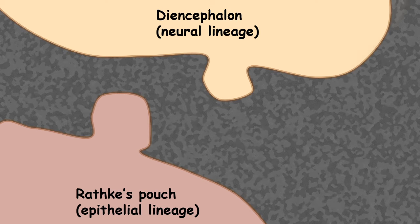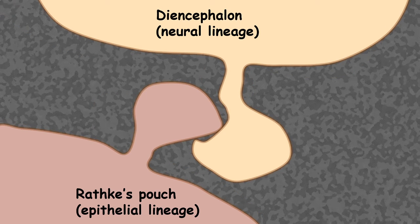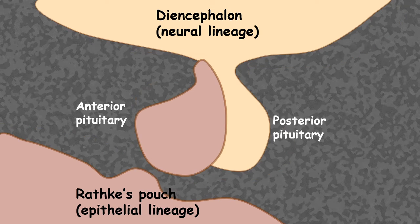The diencephalic protrusion increases in size, as does the Rathke's pouch protrusion. Ultimately, the protrusion from Rathke's pouch is pinched off and the anterior pituitary is formed. The posterior pituitary remains as a continuous protrusion from the diencephalic root. That is how pituitary gland development takes place.